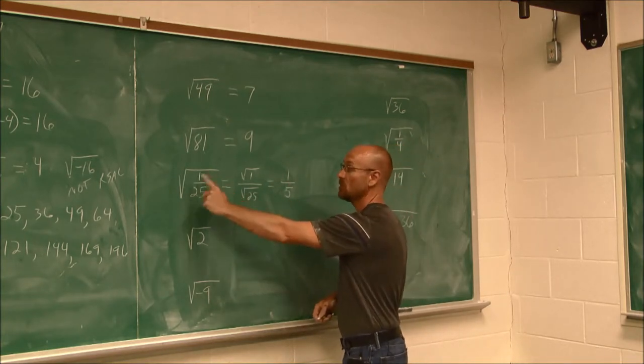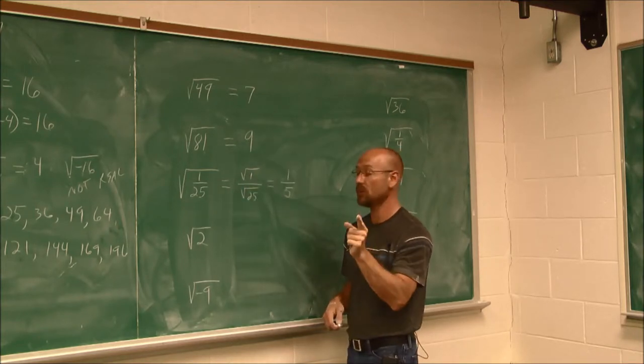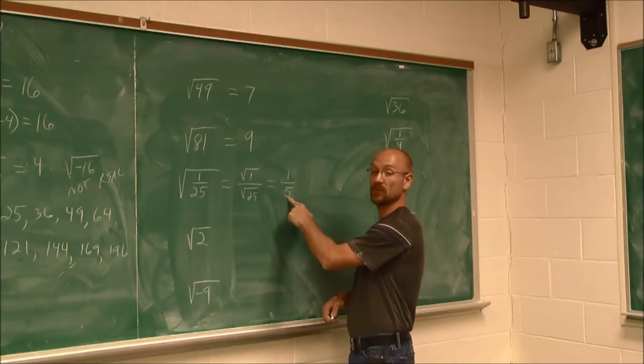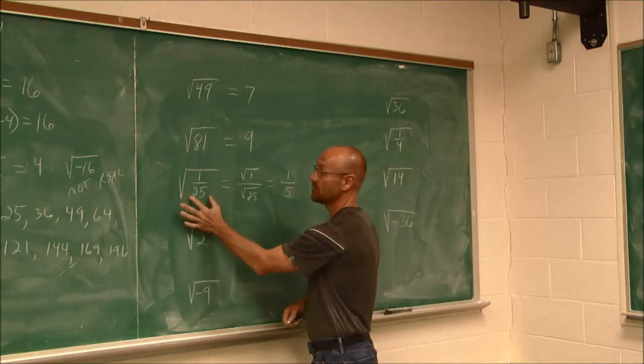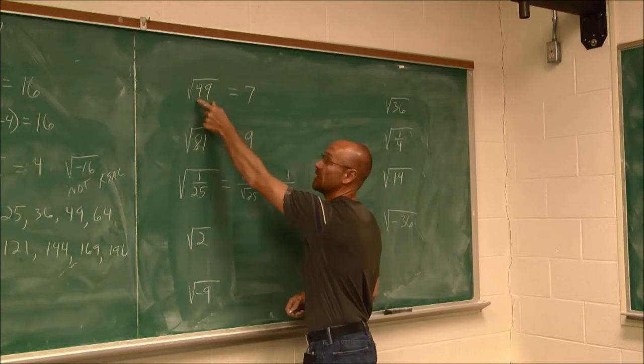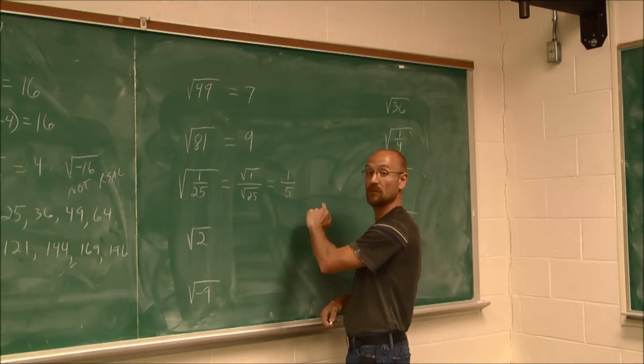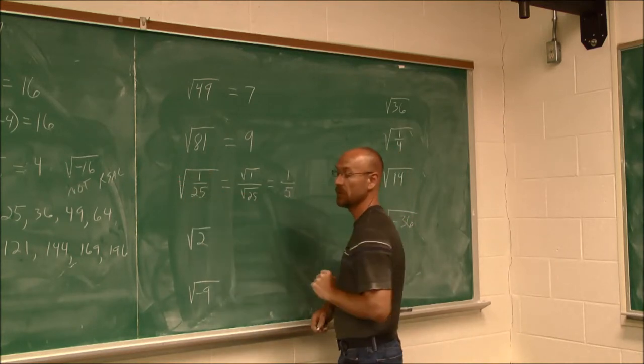And when it comes to radicals, you can always check your work by squaring this value. You should get this value back. If I square 9, I get 81. If I square 7, I get 49. If I square this, 1/5 times 1/5. 1 times 1 is 1. 5 times 5 is 25. I get 1/25th. This value right here.